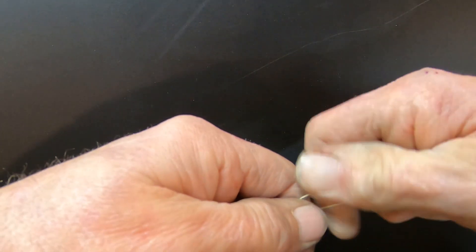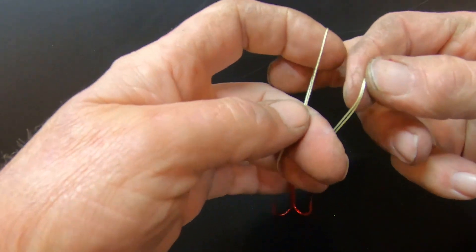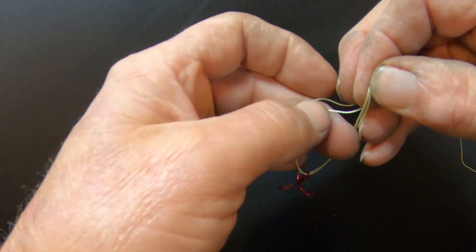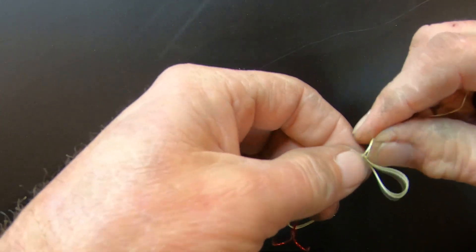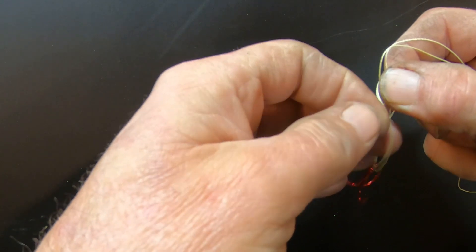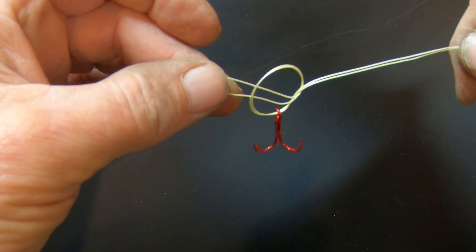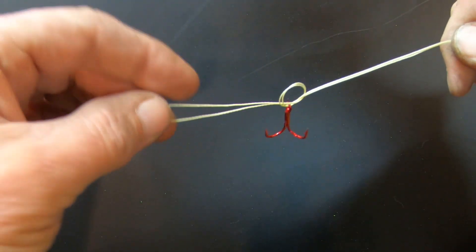And you want to take and do an overhand loop like you're going to tie your shoes. Go over and come back through like this, trying to make sure y'all can see.